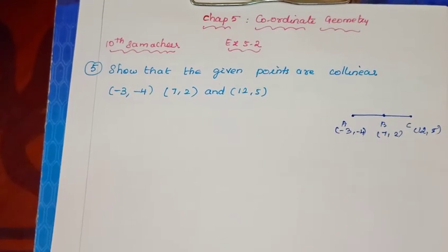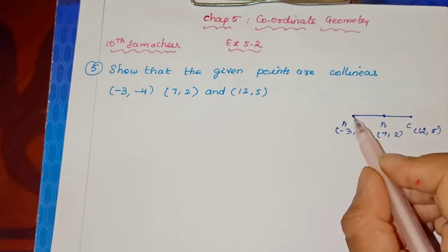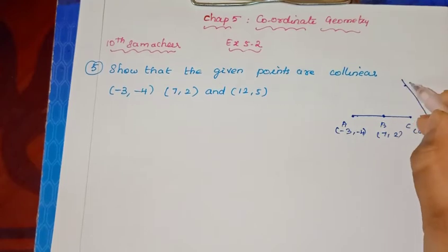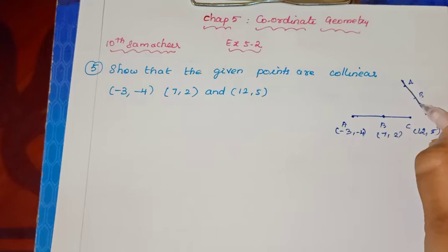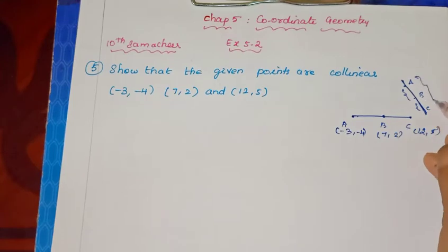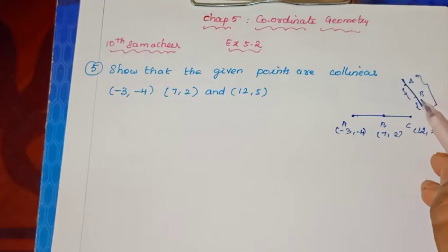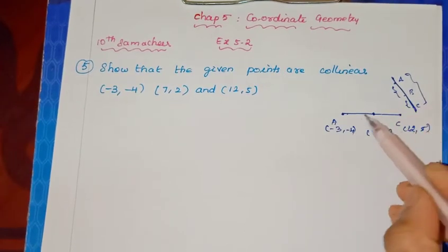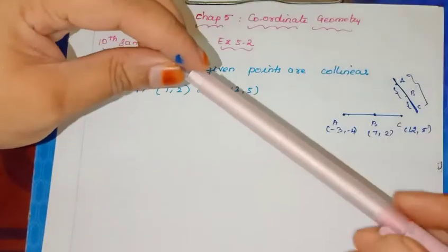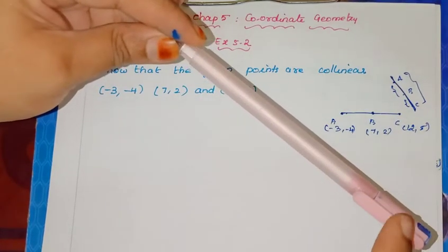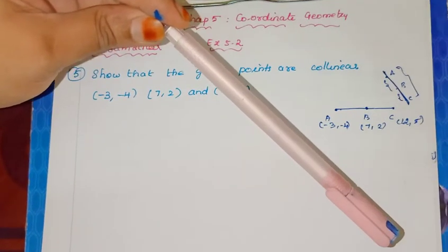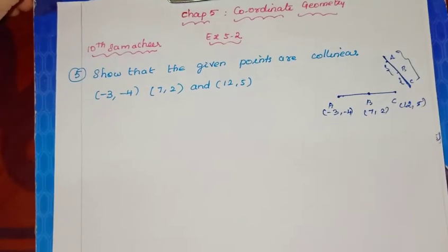So we have to prove that points are collinear using slope concept. We are going to prove that slopes are equal.